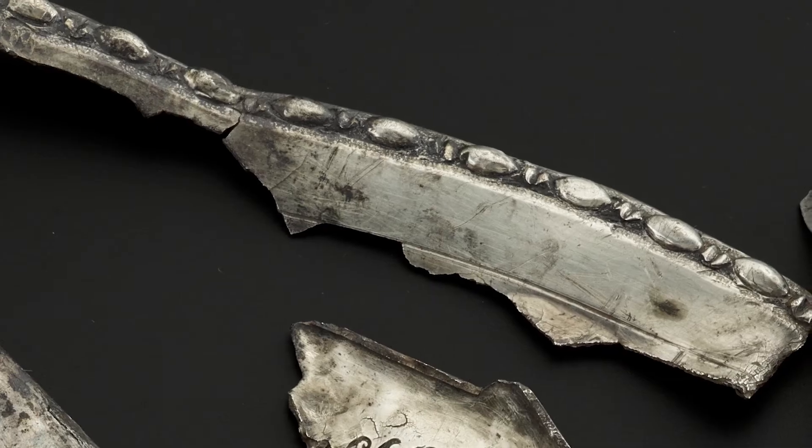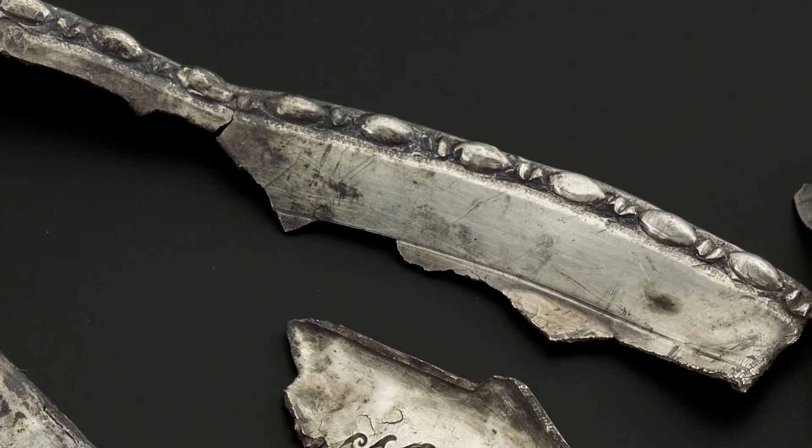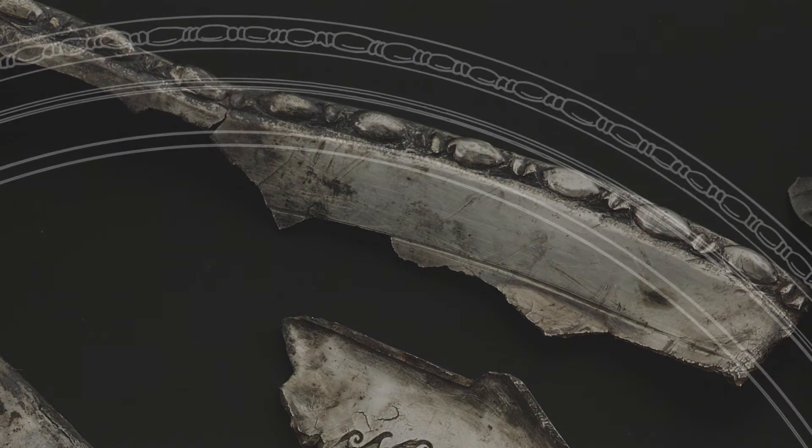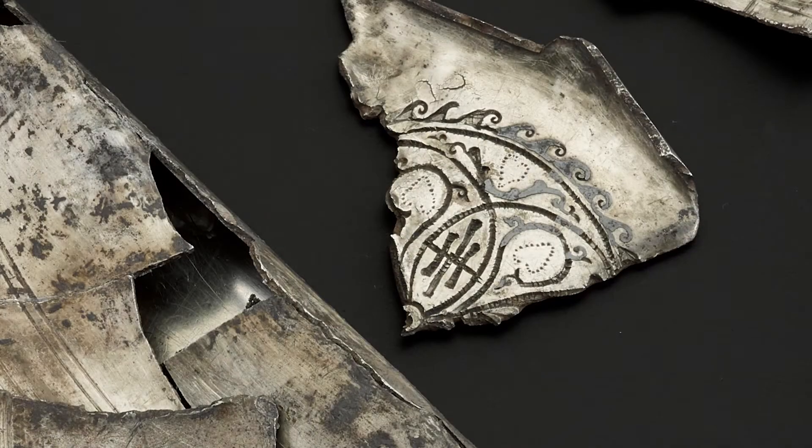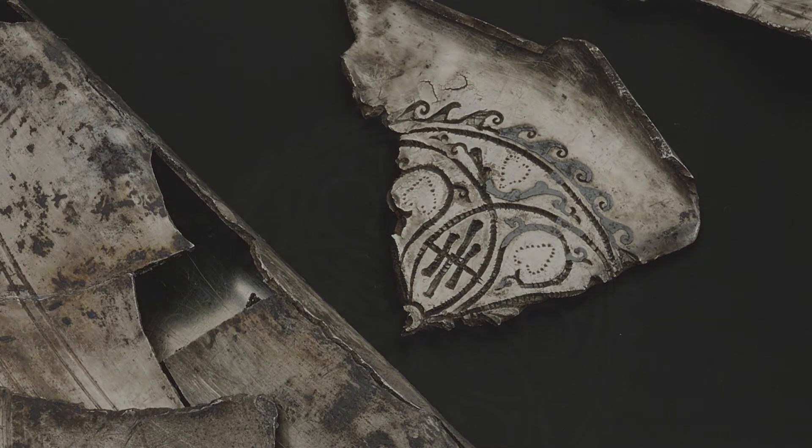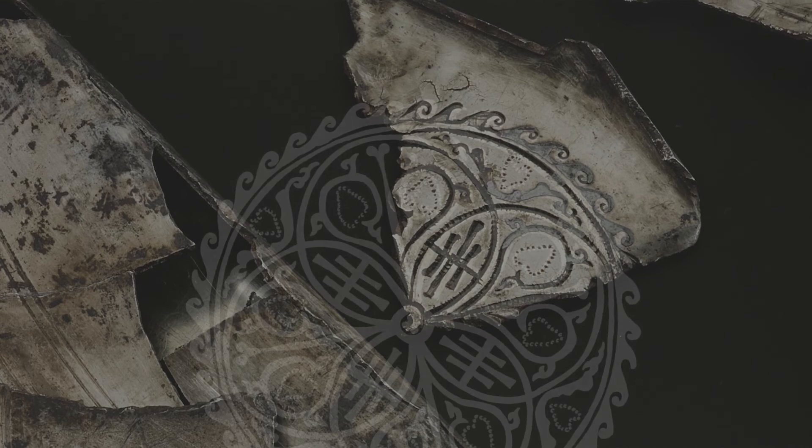These 408 fragments are parts of only four vessels. And they're all rather different. So one of them was originally a beautiful dish about 40 centimeters in diameter with a lovely beaded rim, decorated medallion in the centre. And this would have been used for serving food at the table.